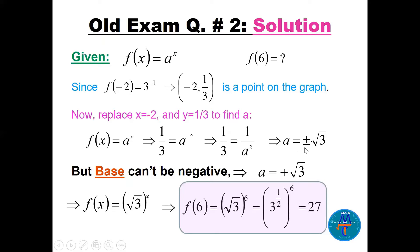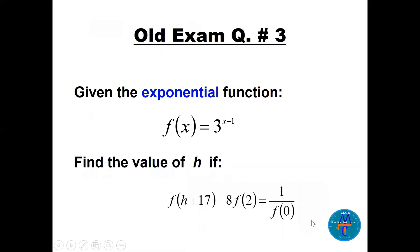Solving gives a = ±√3. We cannot take a negative base, so a = √3. The function is f(x) = (√3)^x. To find f(6), substitute x = 6: (√3)^6 = 27.